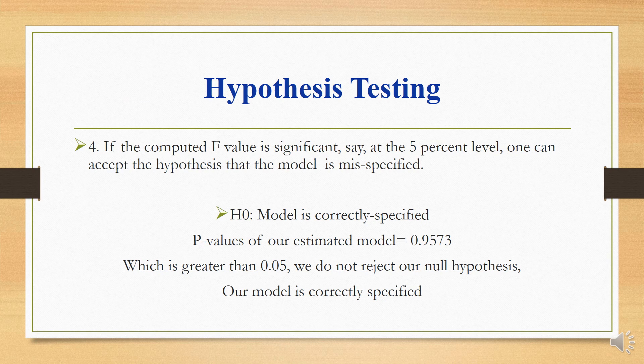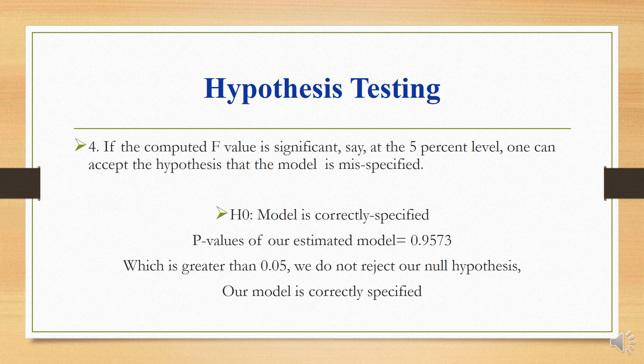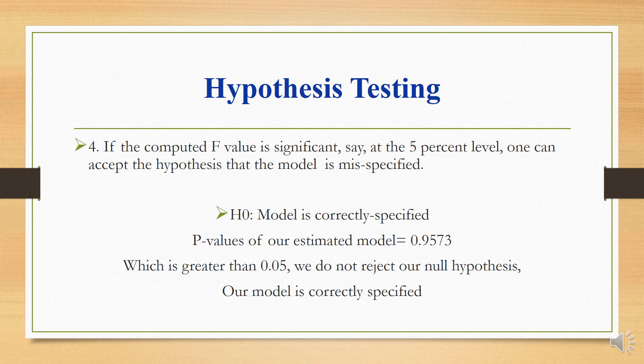So what is the hypothesis? Number 4: If the computed F value is significant, say at 5 percent level, one can accept the hypothesis that the model is misspecified. The null hypothesis is that the model is correctly specified. So if the p-value of our estimated model is 0.9573, which is greater than 0.05, we do not reject our null hypothesis, so our model is correctly specified.